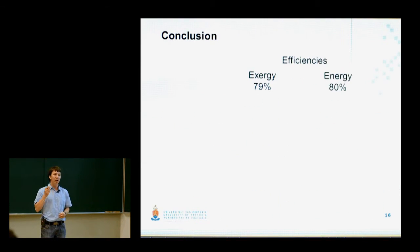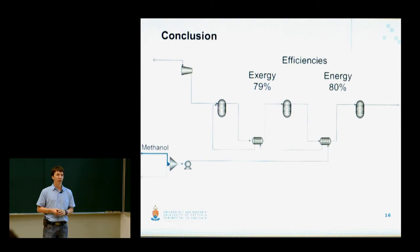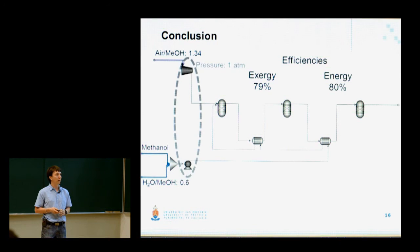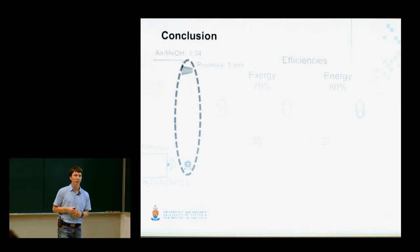The maximum exergy efficiency that was achieved was 79%, whereas the maximum energy efficiency that was achieved was 80%. The optimal conditions predicted by the optimizations are as follows: firstly, a water methanol feed ratio of 0.6 and an air methanol feed ratio of 1.34, and as you all know, a total system pressure of one atmosphere. This concluded the first objective of my investigation to optimize the reforming process and to find the optimal operating conditions.